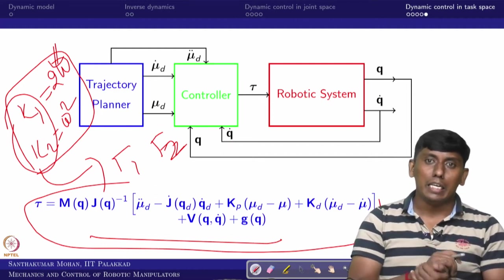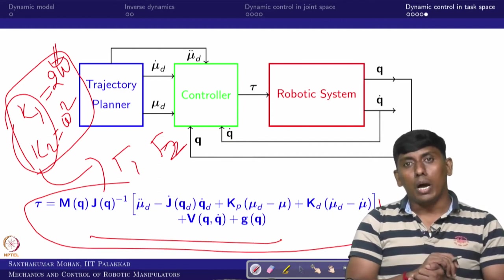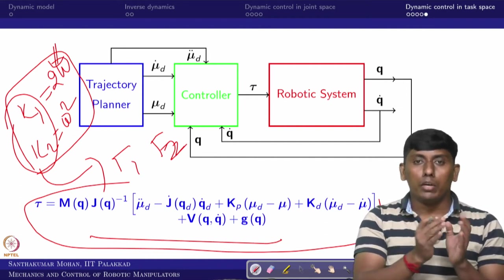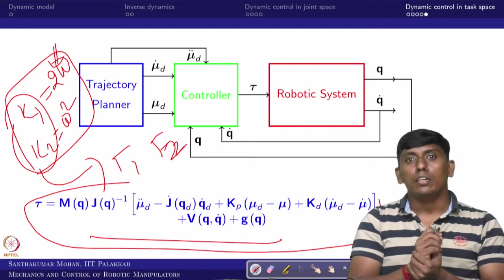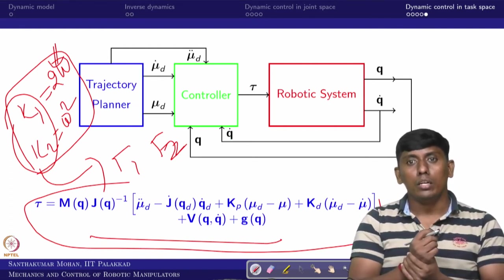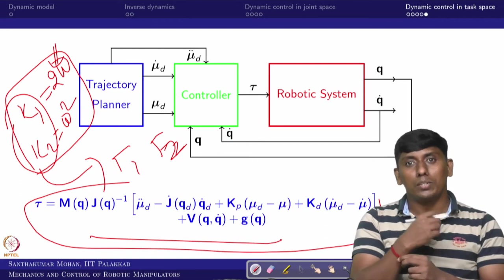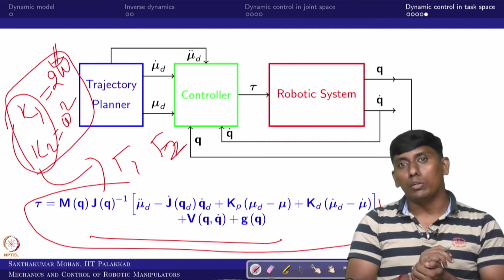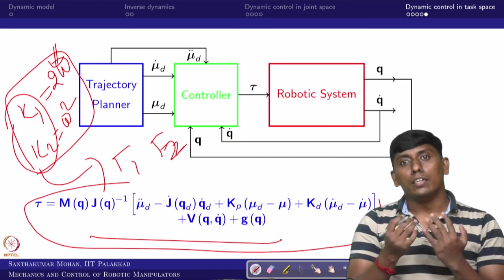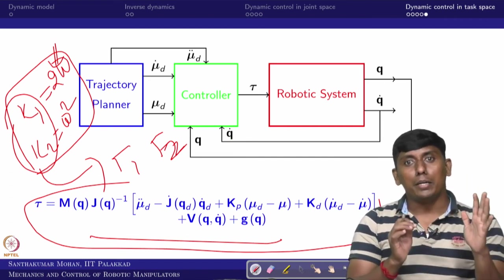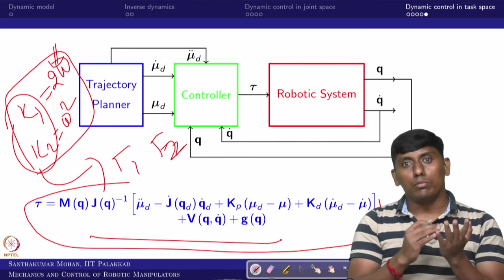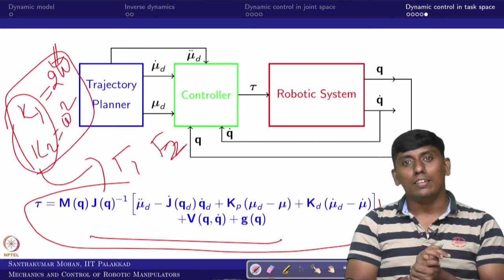If you have a gravity-balanced manipulator, simple PD control is quite enough. But for very accurate precise position following, you must go for modern control — and even model-based control may have uncertainty, so we have to go for robust or adaptive control. Those things we will see later. We close here with dynamic control. The next lecture will cover dual-loop or double-loop control, combining kinematic and dynamic control — which the control community calls backstepping. See you then, take care.